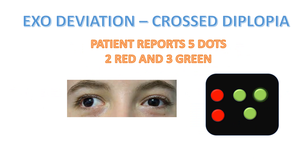Similarly, in exodeviation, the patient might experience crossed diplopia. Again, the patient might respond that they see five lights, two red and three green, but the two red lights from the right eye are seen on the left side and the green lights on the left side are seen on the right side. This is documented as diplopia and it is crossed diplopia.